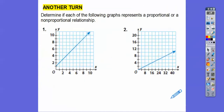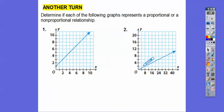So if it goes through the origin, it is proportional. If not, then it's non-proportional. Determine if each of these are proportional or non-proportional. They're both lines, but since this one does not go through the origin and this one does go through the origin, this one's non-proportional and this one's proportional.